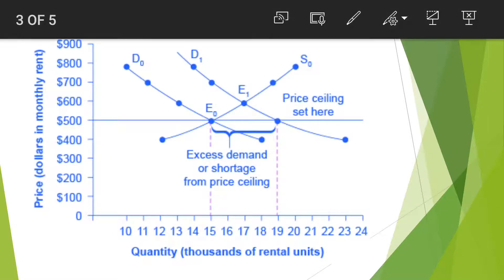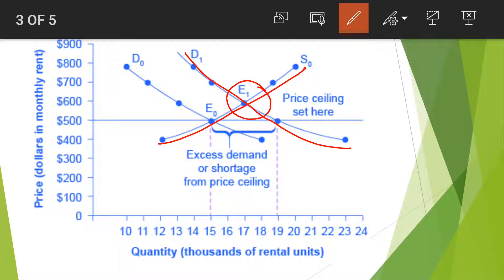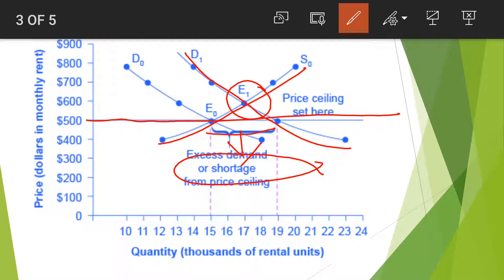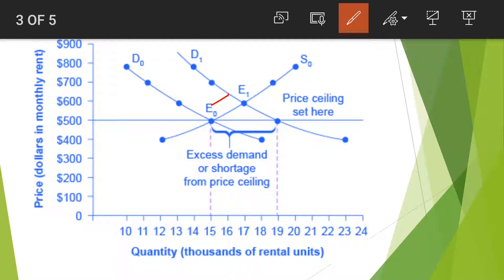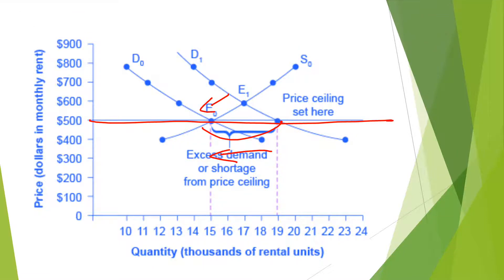Now let's look at the graph of the price ceiling. In the demand and supply graph, the government sets a fixed price. Because demand is in excess and supply is less, there is a shortage of the product. The government fixes a price through price ceiling, and after rationing reduces the demand, the excess demand is brought down. This is how the price ceiling controls the market.